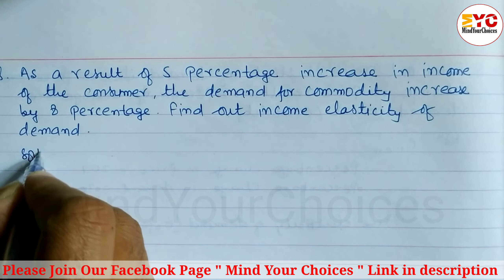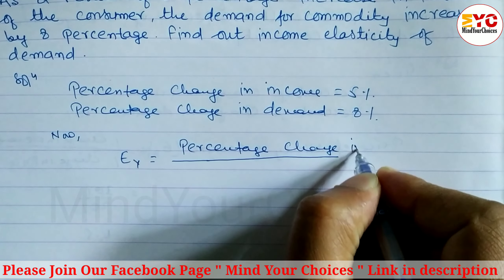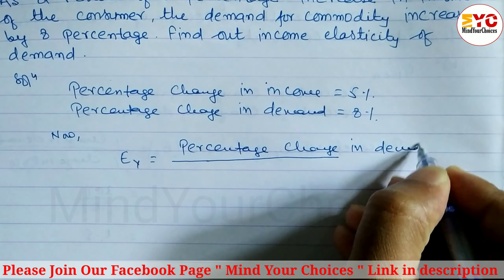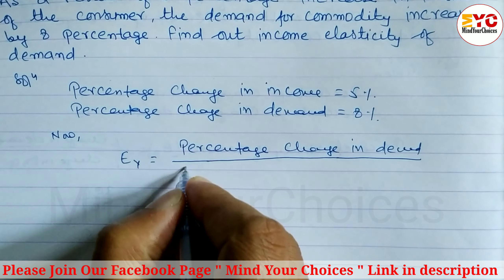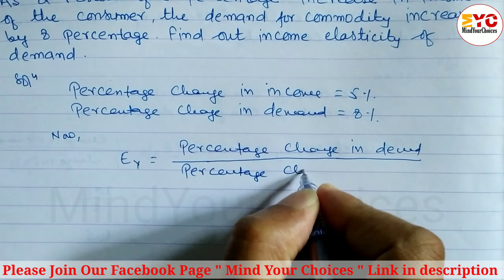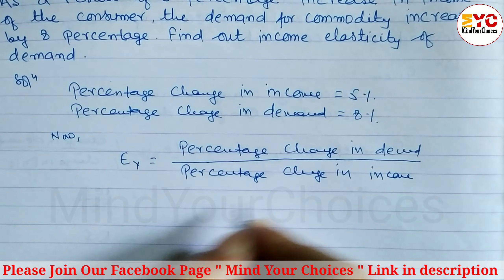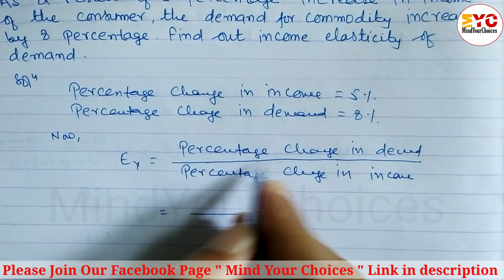We know that Ey — Ey means income elasticity of demand, denoted by Ey — and the formula is: percentage change in demand divided by percentage change in income.